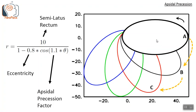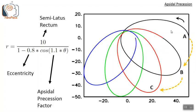However, sometimes this ellipse itself can be seen rotating. This is called apsidal precession. The semi-major axis was initially located at A; in the next cycle the semi-major axis has moved to a new point B, and in a further cycle it has moved to point C, and so on — it keeps shifting during a precession, so the ellipse is not stationary.